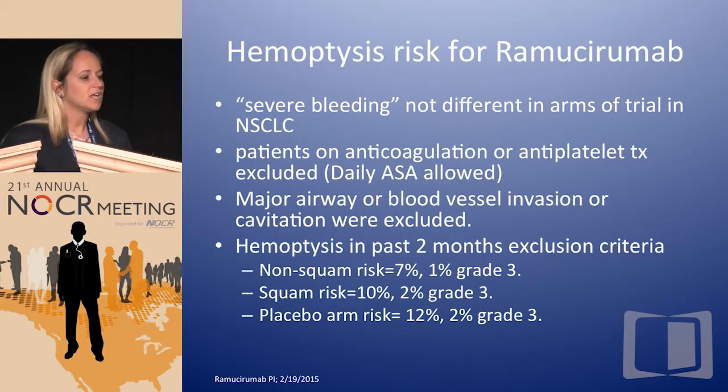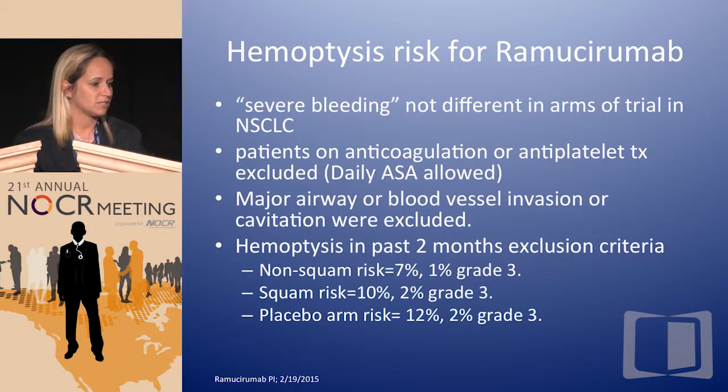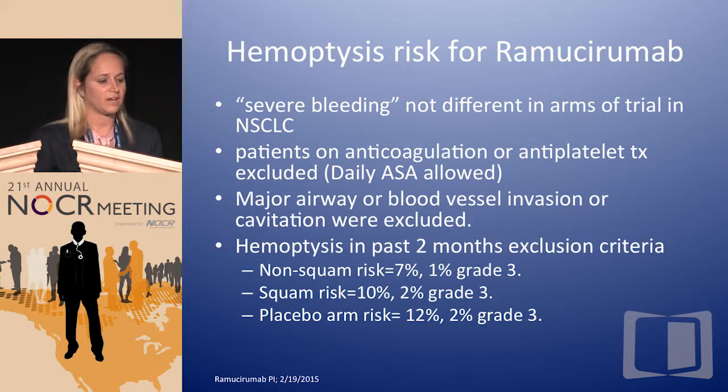Regarding hemoptysis risk, there is no difference in severe bleeding between the docetaxel-only versus docetaxel and ramucirumab arm. Patients on anticoagulation or antiplatelet therapy were excluded, same as ECOG 4599. One difference was that major airway or blood vessel invasion or cavitation were excluded from this trial but not from 4599 — which may partly explain the difference. The hemoptysis risk for all grades and grade 3 was generally similar between the squamous and non-squamous ramucirumab arms.